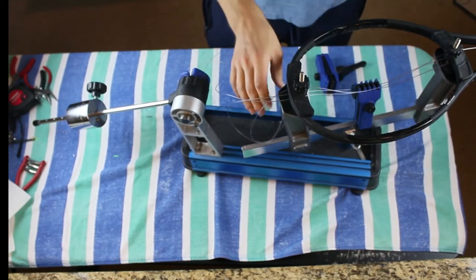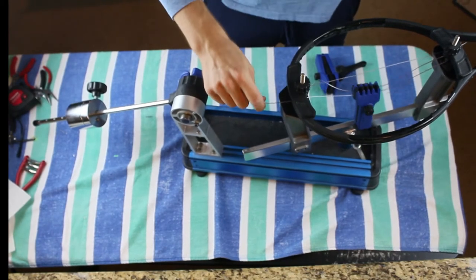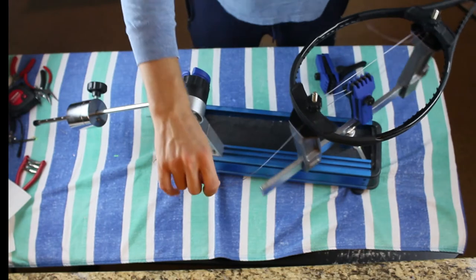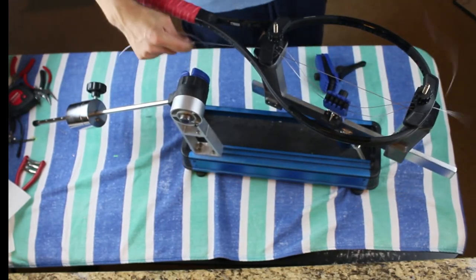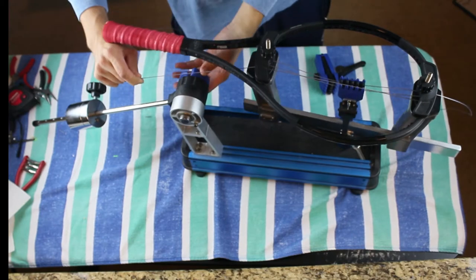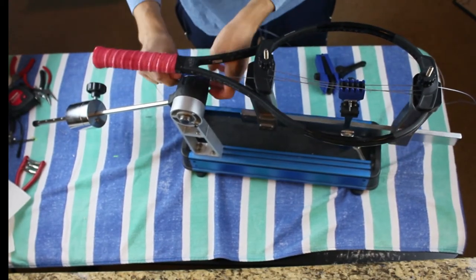So make sure to keep those strings in order, and we're going to go ahead and feed the next main string. It doesn't matter which one, but go ahead and feed that next main string, and now we're going to tension that main string. Using a drop weight, make sure the tensioning bar is parallel to the ground, and we're tensioning that string.